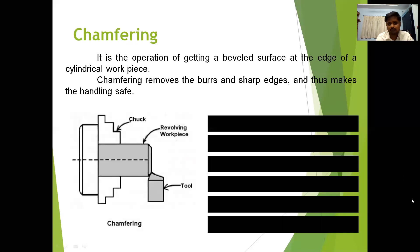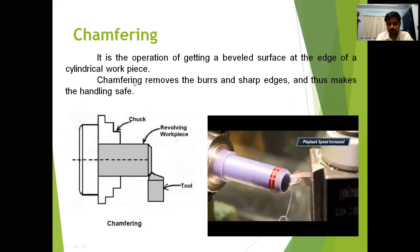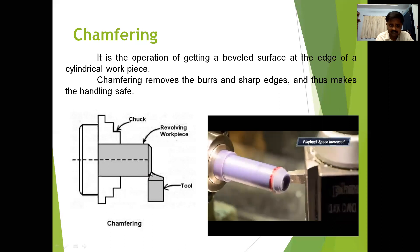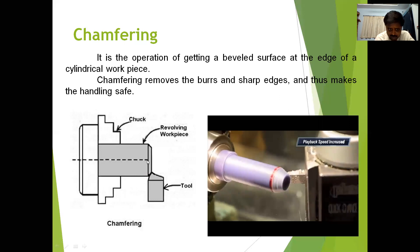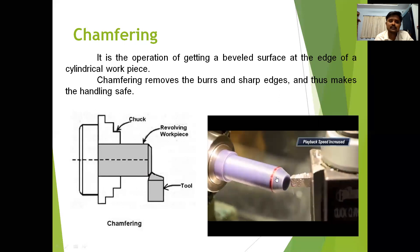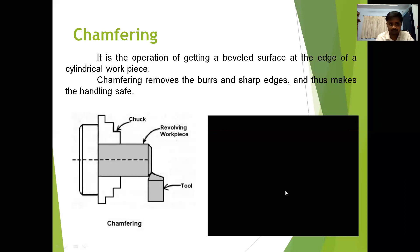Next one is chamfering. Chamfering is the operation of getting a beveled surface at the edge of a cylindrical workpiece. The purpose of chamfering is to remove sharp edges at the end of the surfaces to make handling safe. Initially it is a sharp edge, and we remove it to form a bevel shape so you can handle the object very safely. We make the end surfaces as a beveled shape — that is called chamfering.